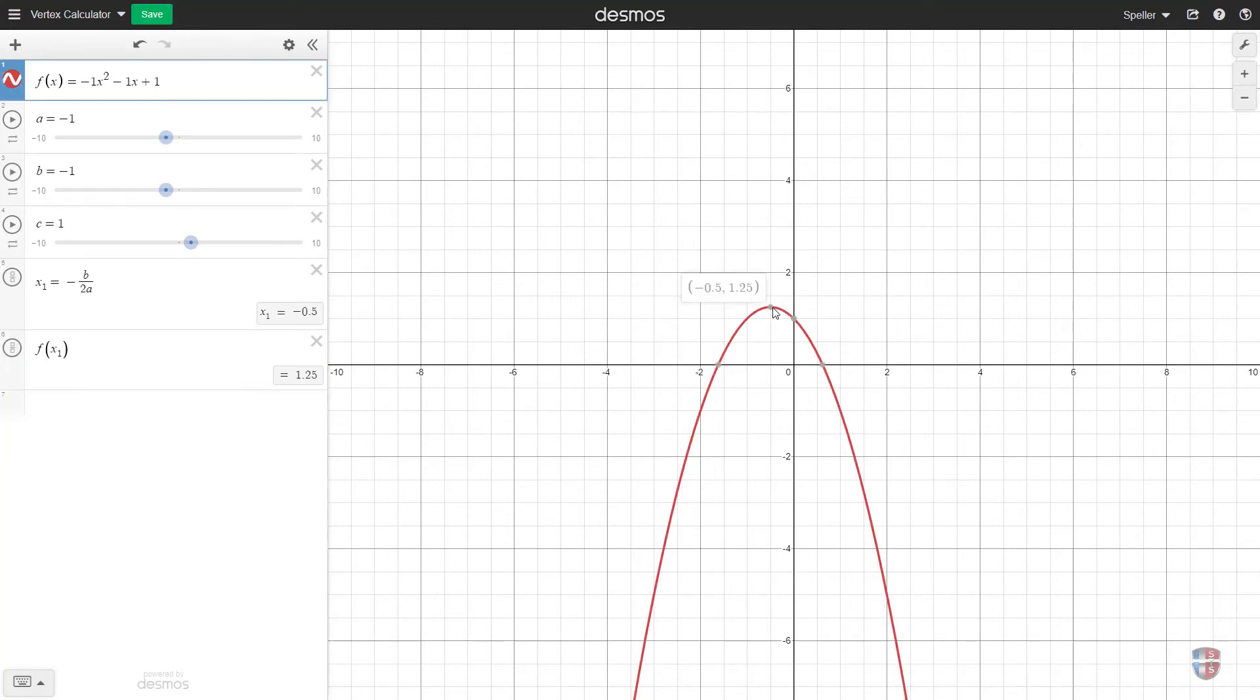Which is exactly what we see here when Desmos actually graphs the function for us. Let's go ahead and name this as well. We're going to call that y sub 1.